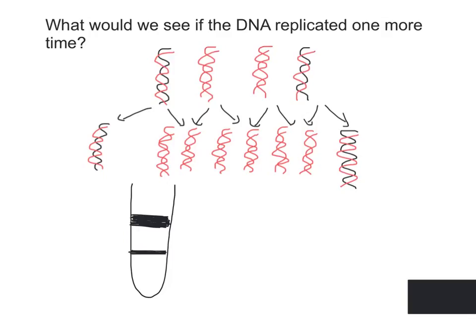When this is centrifuged, this would give us two bands. A thinner band representing the intermediate 14N, 15N DNA, and a thicker band representing the 14N lighter DNA.